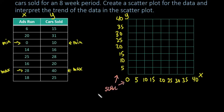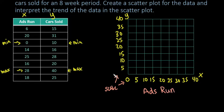It's also important to label your axes. This one would be labeled 'Number of Ads Run' and over here we would label it 'Cars Sold.'